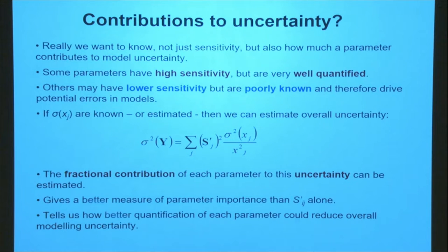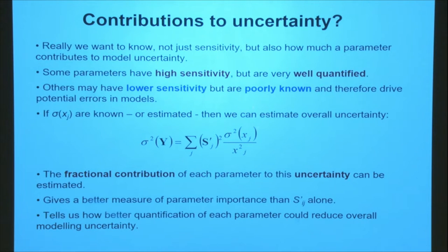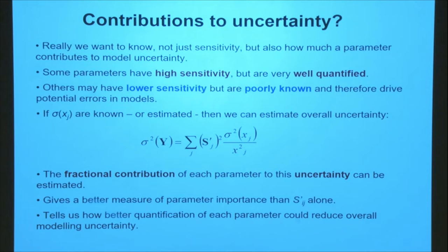But the problem with this — there are two problems. One, it's not actually telling us what we want to know, which is which of these parameters are contributing to the output variance. Because some parameters will have very high sensitivities — H plus O2 is one example — but actually its uncertainty is really quite small; it's quite well constrained. So it isn't necessarily the main driver of errors in our model. What we need to do is combine information on sensitivity with input uncertainty. And the second thing is, if these ranges are quite wide, just looking at a single point we might be missing all sorts, and we certainly won't be looking at interactions that might happen between parameters.